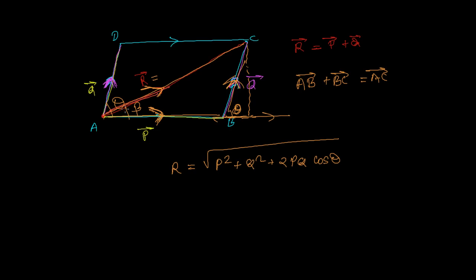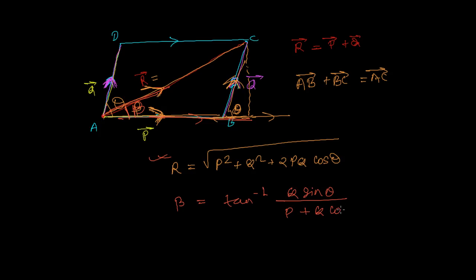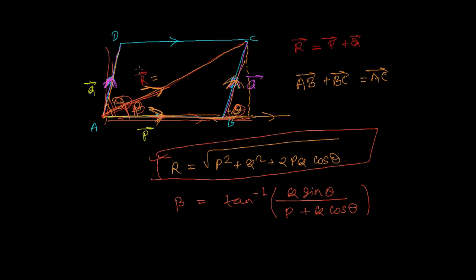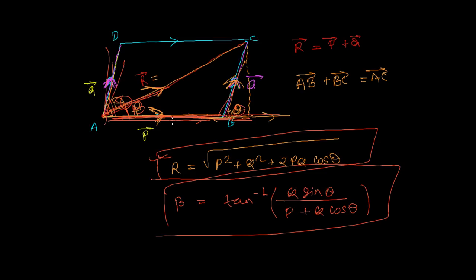To give the direction of this resultant vector, the direction angle beta with respect to the first vector P will be: beta equals tan inverse of Q sine theta divided by P plus Q cosine theta. Here, theta is the angle between vector P and vector Q. This equation gives you the resultant of the two vector addition when they are acting along the two adjacent sides of the parallelogram, and beta gives the angle of the resultant with respect to the first vector P.